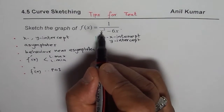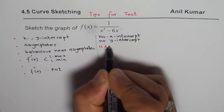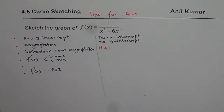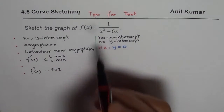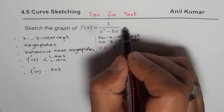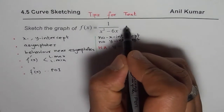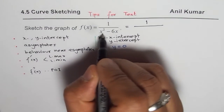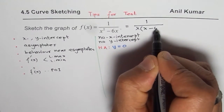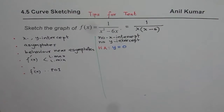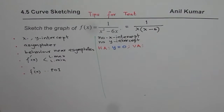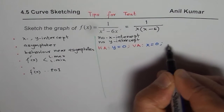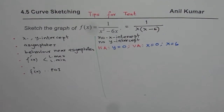Now let's look at asymptotes. Since the degree of the denominator is much higher, we have a horizontal asymptote at y = 0. We also have vertical asymptotes since the denominator can be 0 for two values. Factoring: x² - 6x = x(x - 6), so there are two vertical asymptotes: one at x = 0 and one at x = 6.